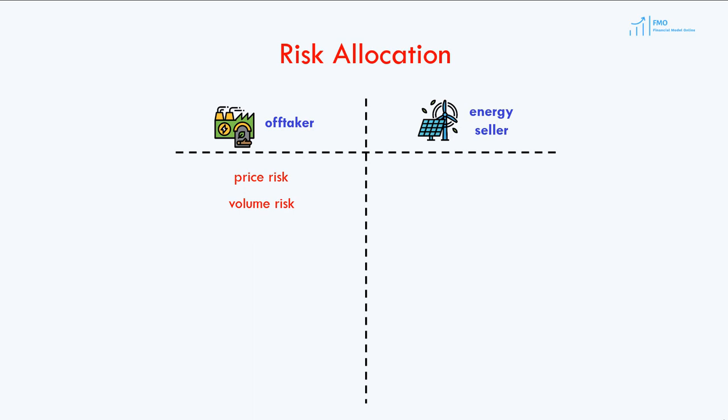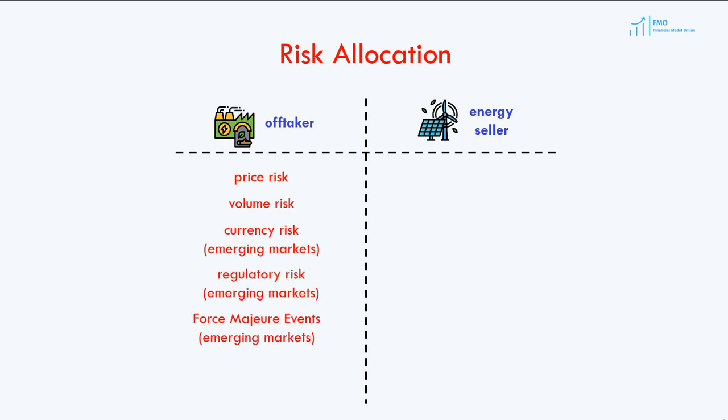The price risk is the risk that energy prices may be lower in the future than the PPA fixed price. Volume risk is the risk that the energy bought under the PPA may not be necessary; however, the off-taker still has to pay the energy seller. In addition to the price and volume risk, in emerging markets, the off-taker also takes the risk of adverse currency movements, political and regulatory risks, and the risks arising from force majeure events.